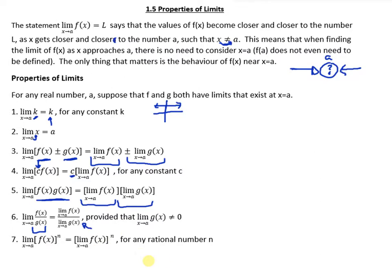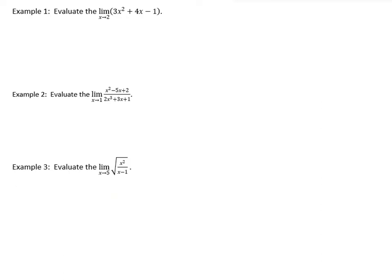Pretty tedious, but let's actually put those into play now. The first thing we have to know how to do is just simply plug in what x approaches. In the first case, the limit of 3x² + 4x - 1 as x approaches 2. We know that this right here is a polynomial.